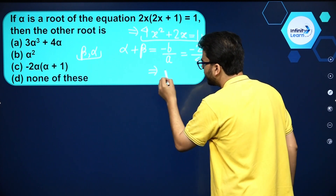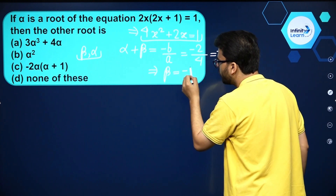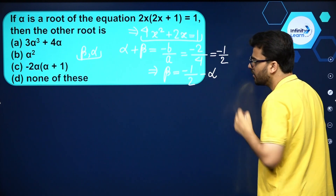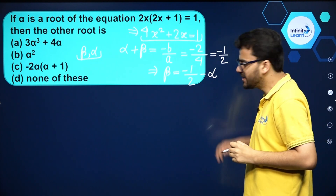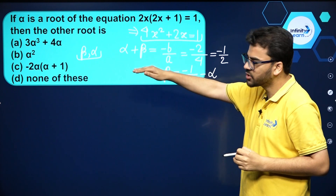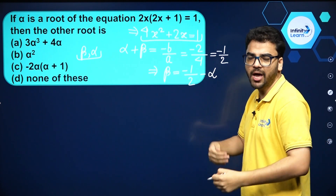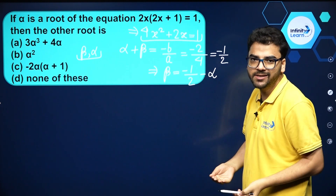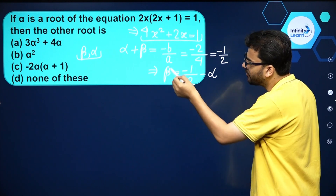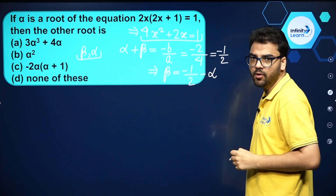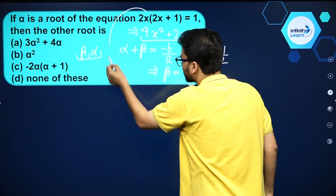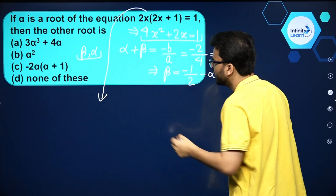So beta is coming out to be equal to minus 1 by 2 minus alpha. This should be the answer, but out of the given options it is not working directly, so we have to manipulate it a bit more. Since alpha is a root of this quadratic equation, we can substitute x = alpha.